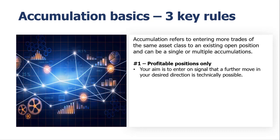Here we have 3 key rules that we would suggest you adhere to, certainly as you are learning to accumulate in your trading. Number 1 is: accumulate into profitable positions only. There are other strategies which average into a drop in position with the hope that ultimately it will rise again, but in terms of this basic accumulation strategy, we suggest you stick with profitable positions only, where the aim is to enter on a signal that a further move in your desired direction is technically possible — this may be, for example, through the next resistance line if you are trading a long trade.